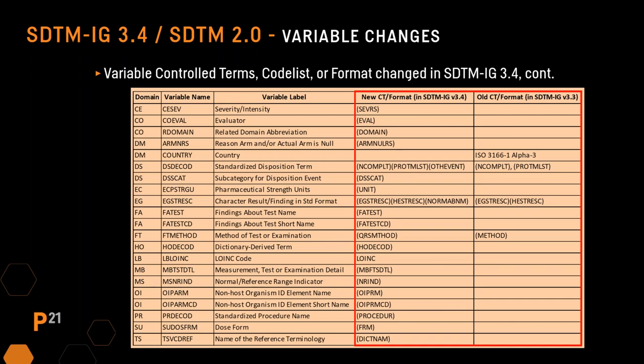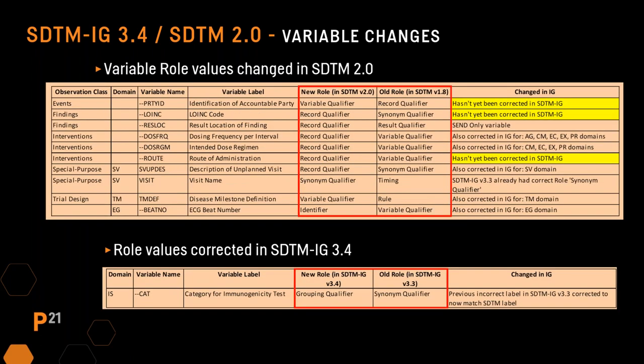Code lists or formats have been changed for a number of variables in the implementation guide. For most, it's just that a code list has been added. But for two variables this isn't the case: for the country variable, the ISO 3166 format was removed, and for the FT method variable, the code list was changed from method to QRS method. Variable role has been changed for 10 variables in SDTM 2.0. For three variables — partyID, LOINC, and root — the role was not also corrected in the implementation guide, creating a discrepancy between the model and the IG.